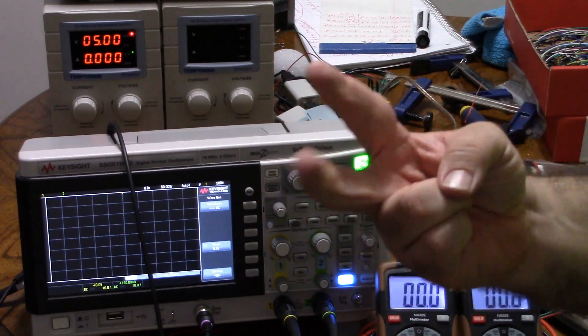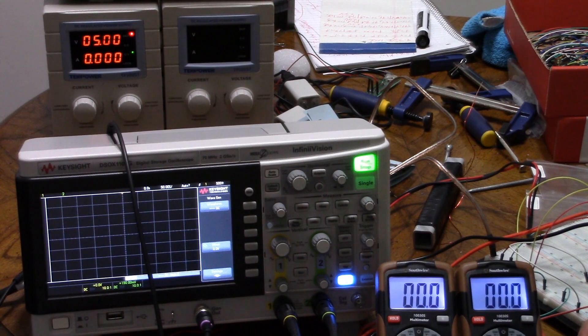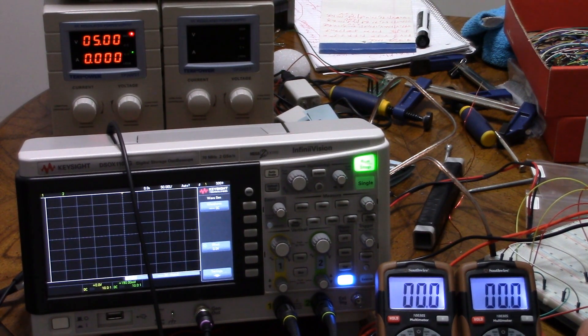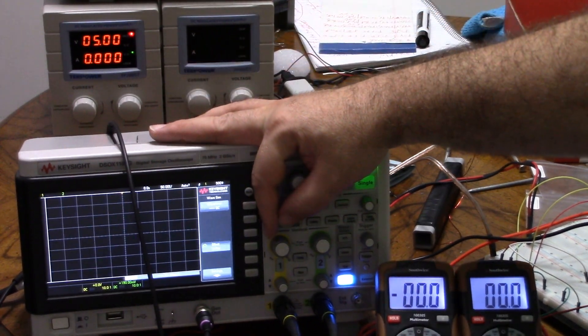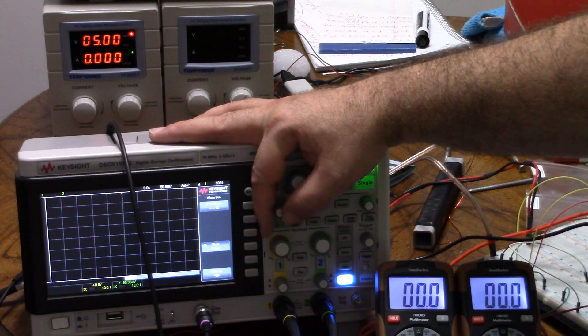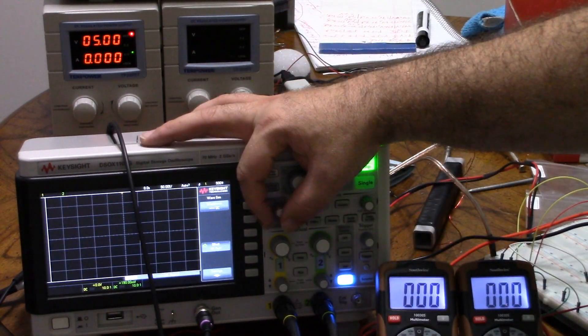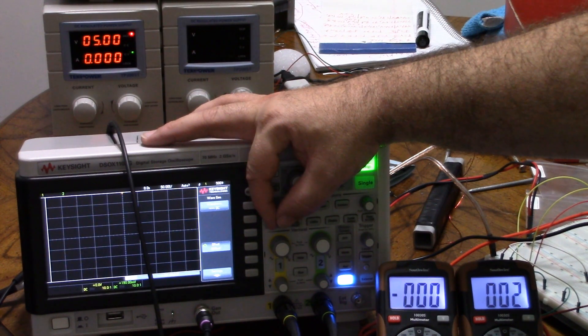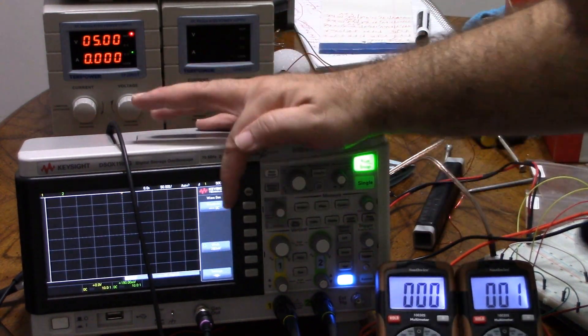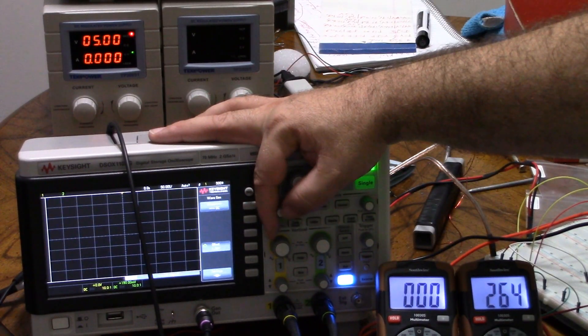Now I'm going to switch to the NPN plus NPN equals Darlington NPN arrangement. So the signal feeds the first NPN's base, and the load is fed by the second NPN's emitter. So once again, I'm going to turn up the signal until I get any base current. Oh, and I need to turn it back down to microamps so I can measure better. And there we go. So let's go back down to one.